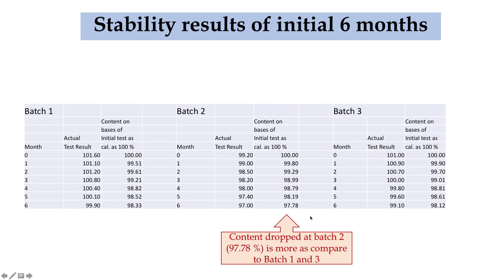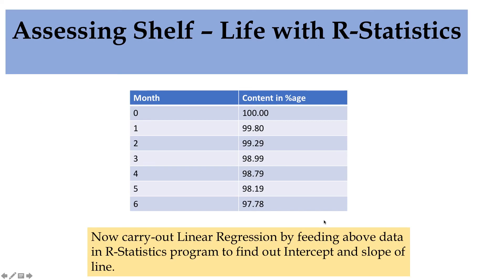Batch number two is the worst case, so we will calculate our predicted shelf life on the basis of the results of batch number two. Here are the results for batch number two — the initial six-month results at real-time stability studies. We will carry out linear regression by feeding this data into the R statistics program to find out the intercept and slope of the line.